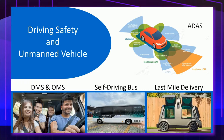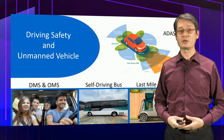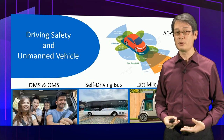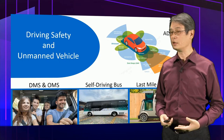The driver monitoring system, DMS, provides real-time evaluation of the driver's status to ensure they are in good condition for driving. For example, it detects if the driver's eyes are closed or if the driver is falling asleep by nodding their head, and provides a warning to the driver.